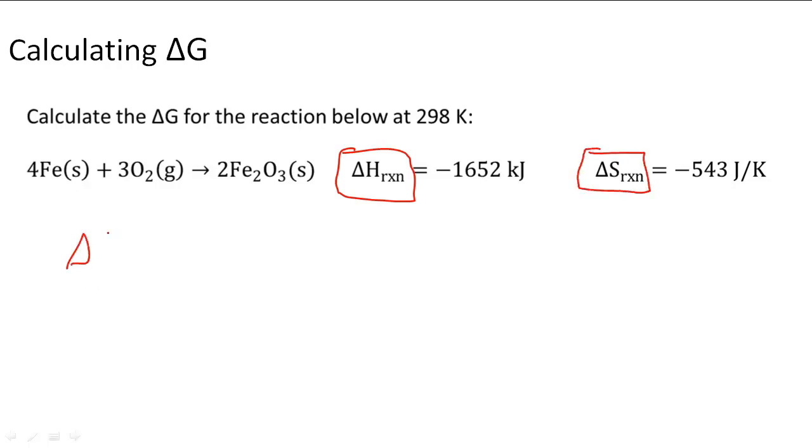So we know that the Gibbs free energy equation is going to give us ΔG equals ΔH minus temperature times the change in entropy. So we know this and we also know this.